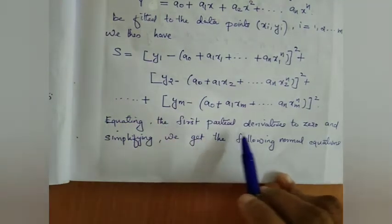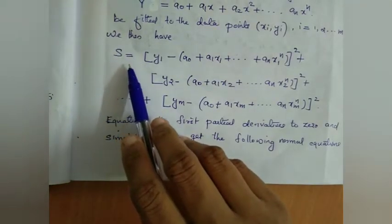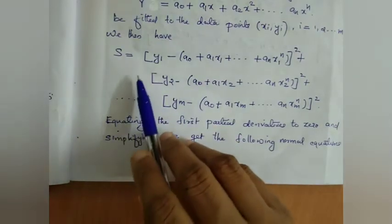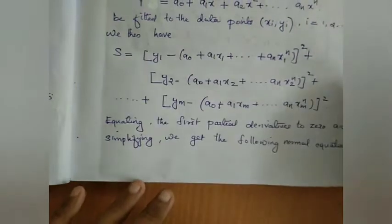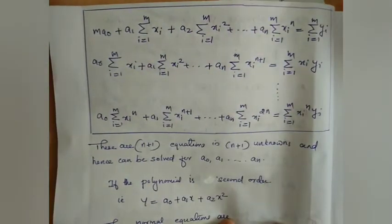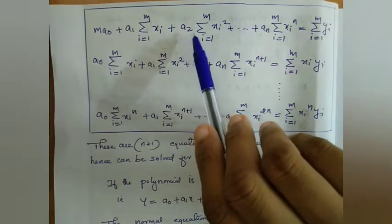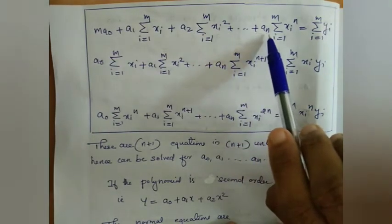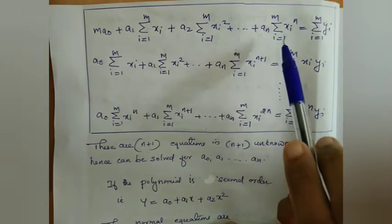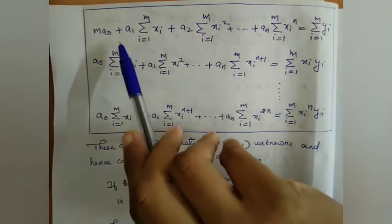Then, equating the first partial derivatives to zero and simplifying — that is, ∂S/∂a0 = 0, ∂S/∂a1 = 0, ∂S/∂a2 = 0, and so on — we get the following normal equations: m·a0 plus a1 times summation of xi plus a2 times summation of xi squared, and so on up to an times summation of xi raised to n, equals summation of yi.